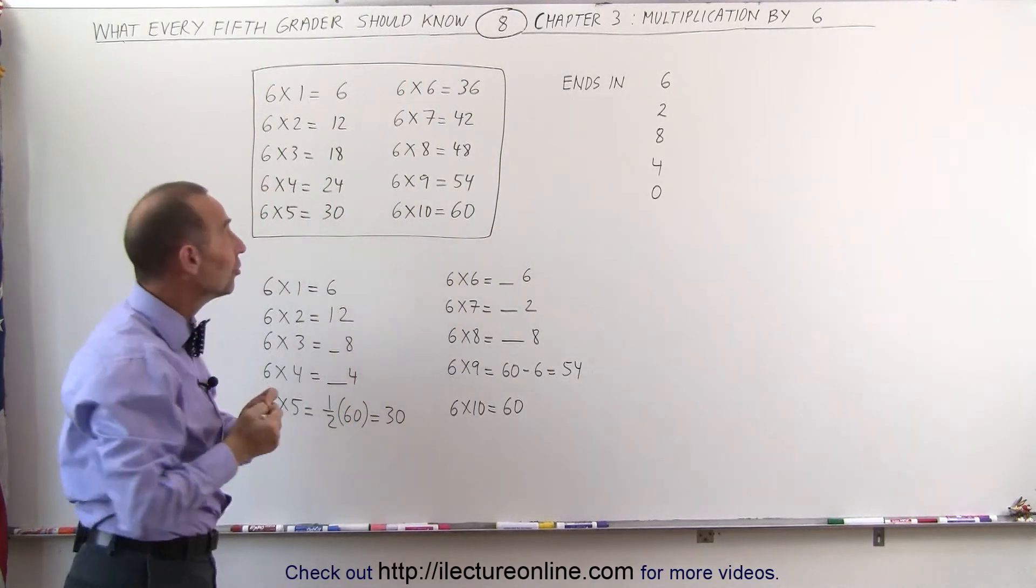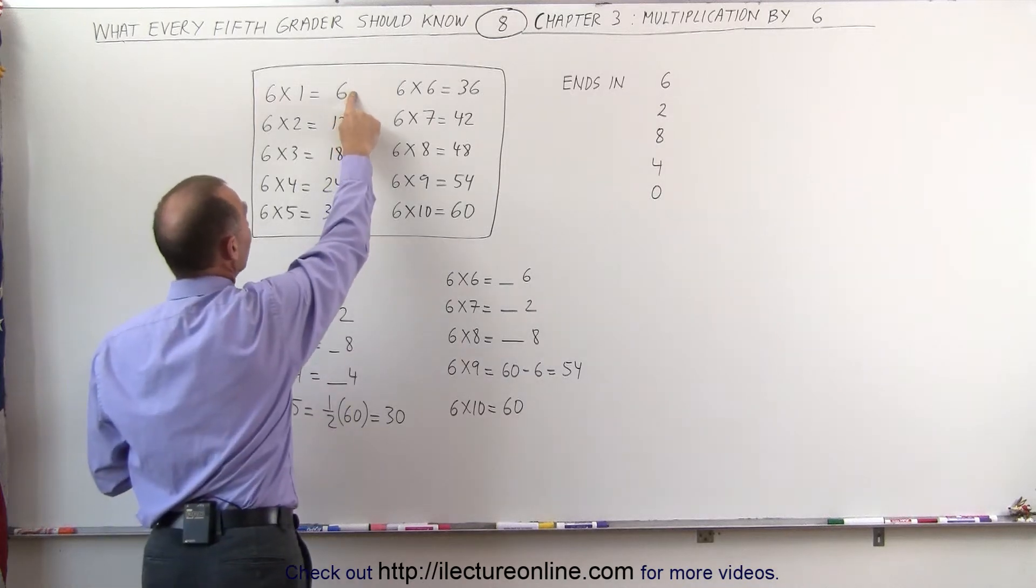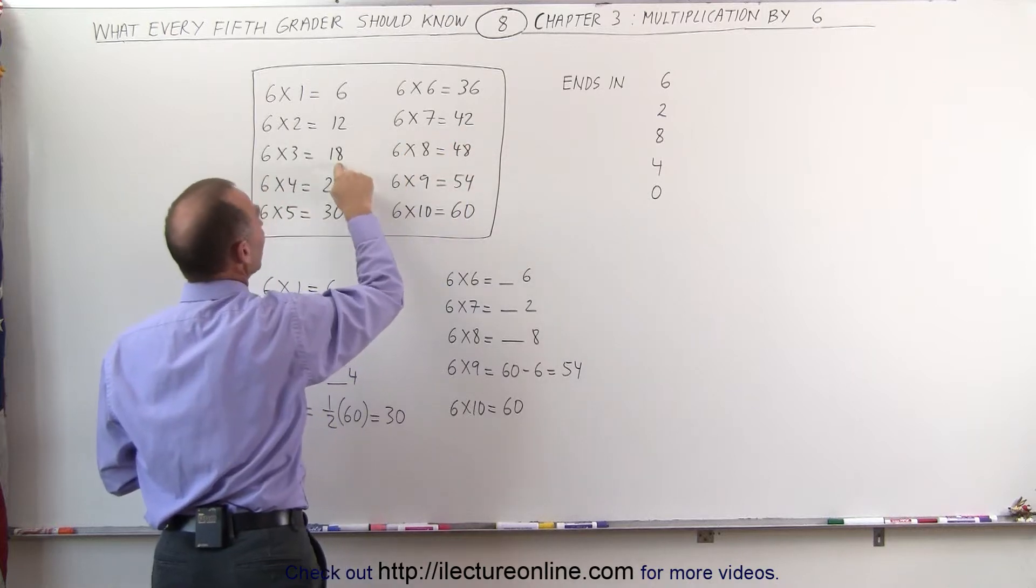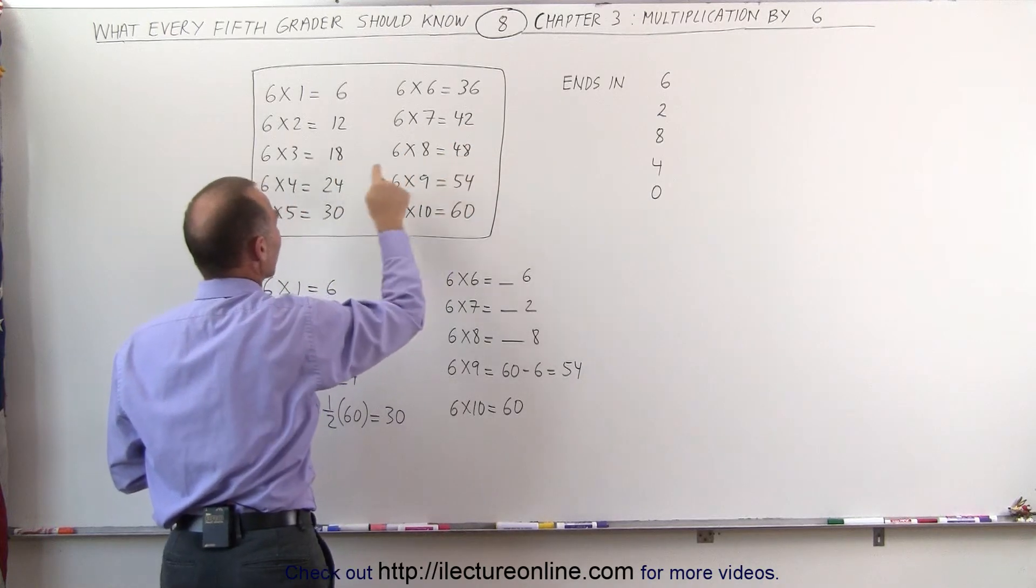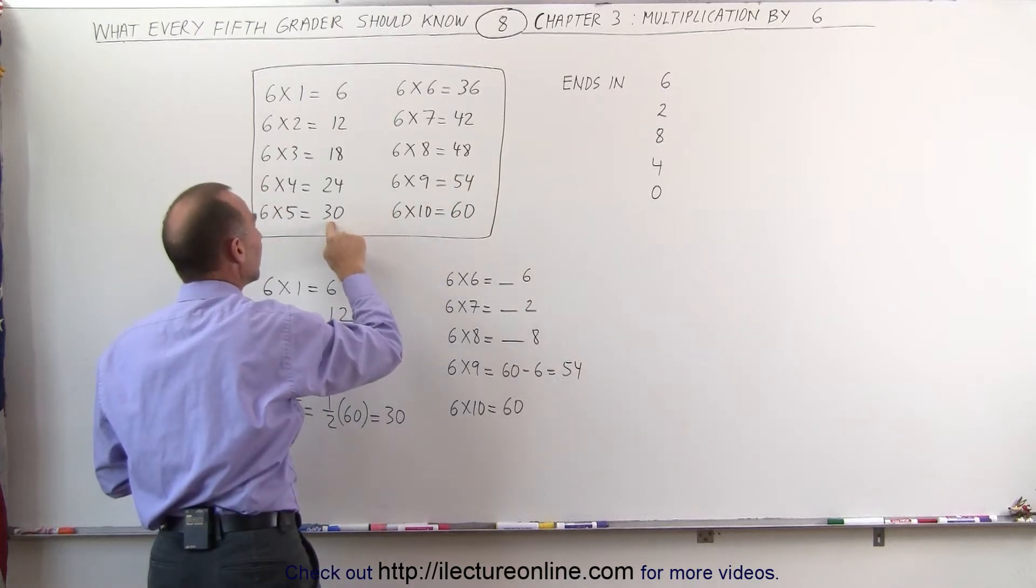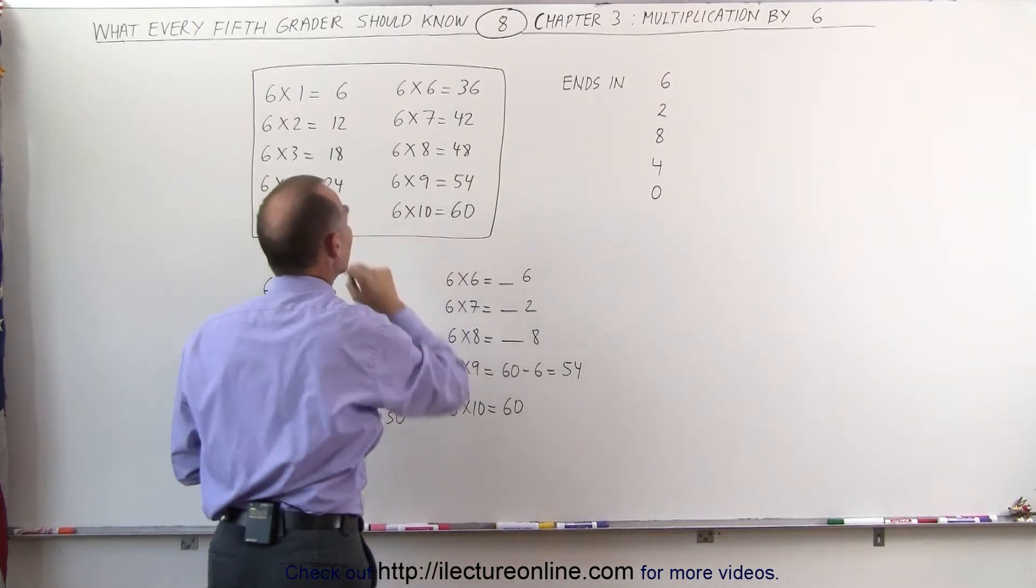Look at the answers and notice that the first one ends in a 6, so does this one. The second one ends in a 2, so does this one. The third one ends in an 8, so does this one. The fourth one ends in a 4, so does this one. And the last one, 30, which is half of 60, but they both end up in 0.